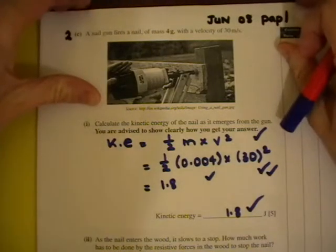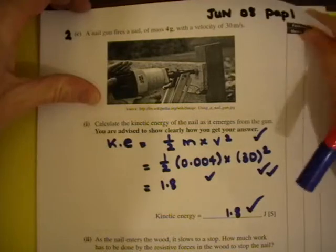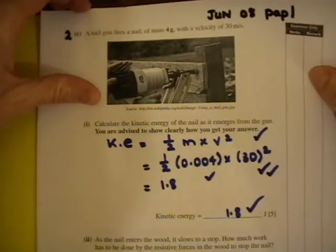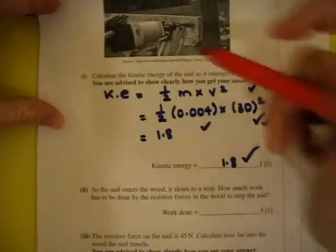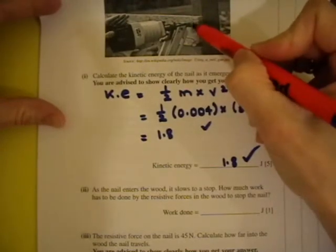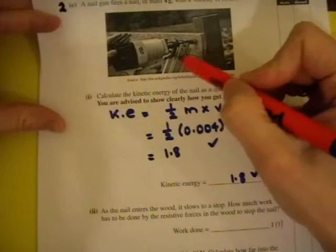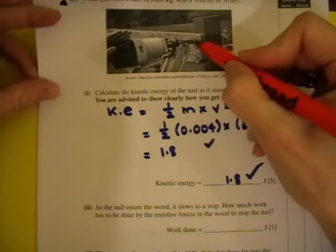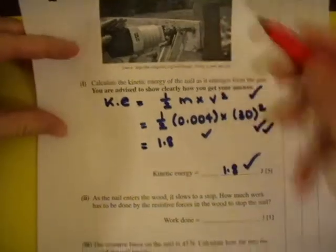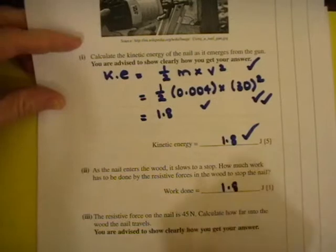As the nail enters the wood, it slows to a stop. How much work has to be done by the resistive forces in the wood to stop the nail? So if the nail has 1.8 joules of energy as it's passing into the wood here, it's going to take 1.8 joules of work for the wood to stop it.